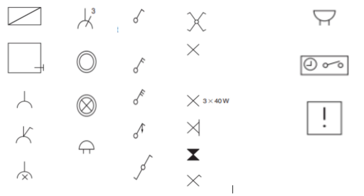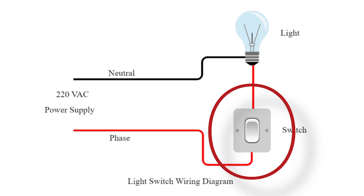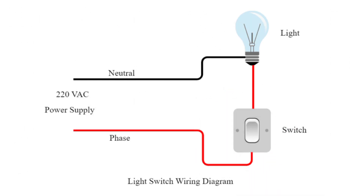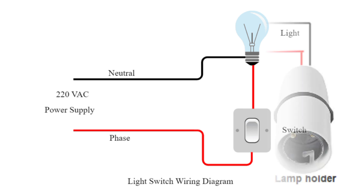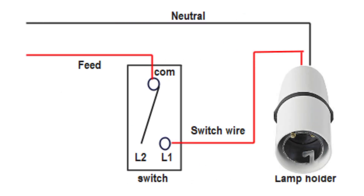The drawing is a representation of a real project that we want to do. For instance, if we want to wire up a switch to a light, it is the drawing that would guide us as to how the wiring is going to be. The drawing will help us to understand how to do the real wiring.